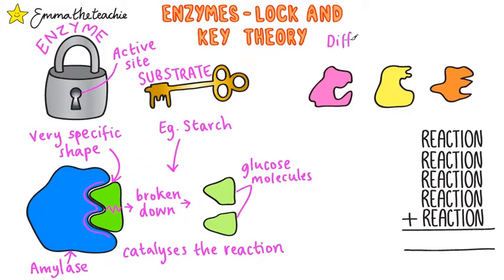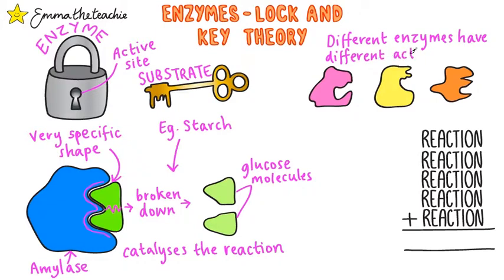Different enzymes have different active site shapes. This is because their amino acid chains have folded differently, giving a different 3D structure.